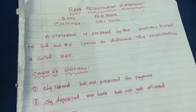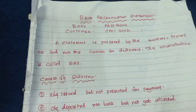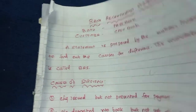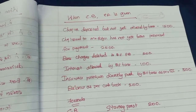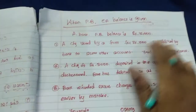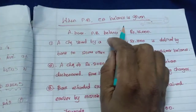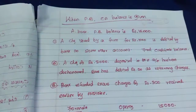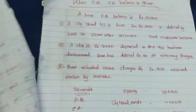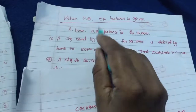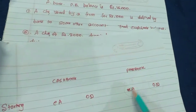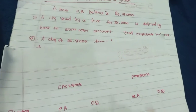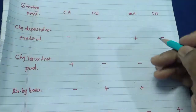Next, I am going to solve the problems. The first one is when passbook current account balance is given. We have to read the question carefully — passbook current account balance is given — and use the appropriate formula: plus, minus, plus, minus.